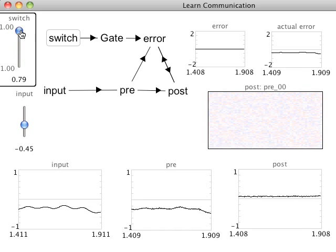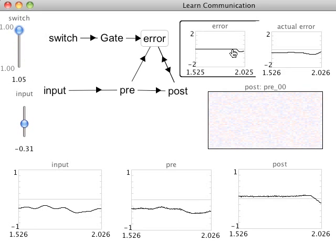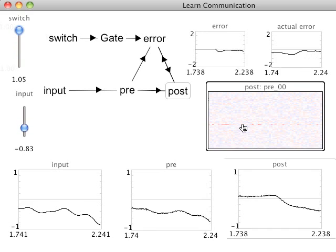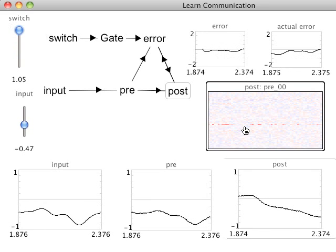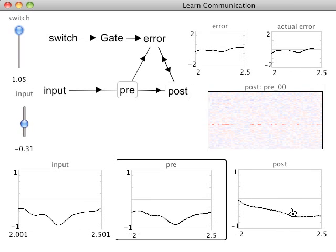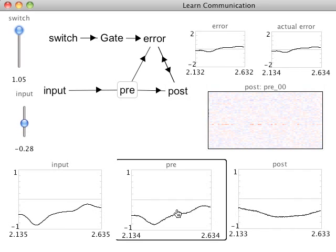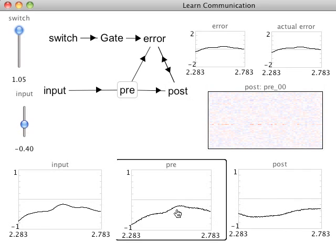When we set this switch to one, the error signal now reflects the true error in the circuit, and the weights begin to change. As well, the post-synaptic population more accurately reflects the activity in the pre-synaptic population.